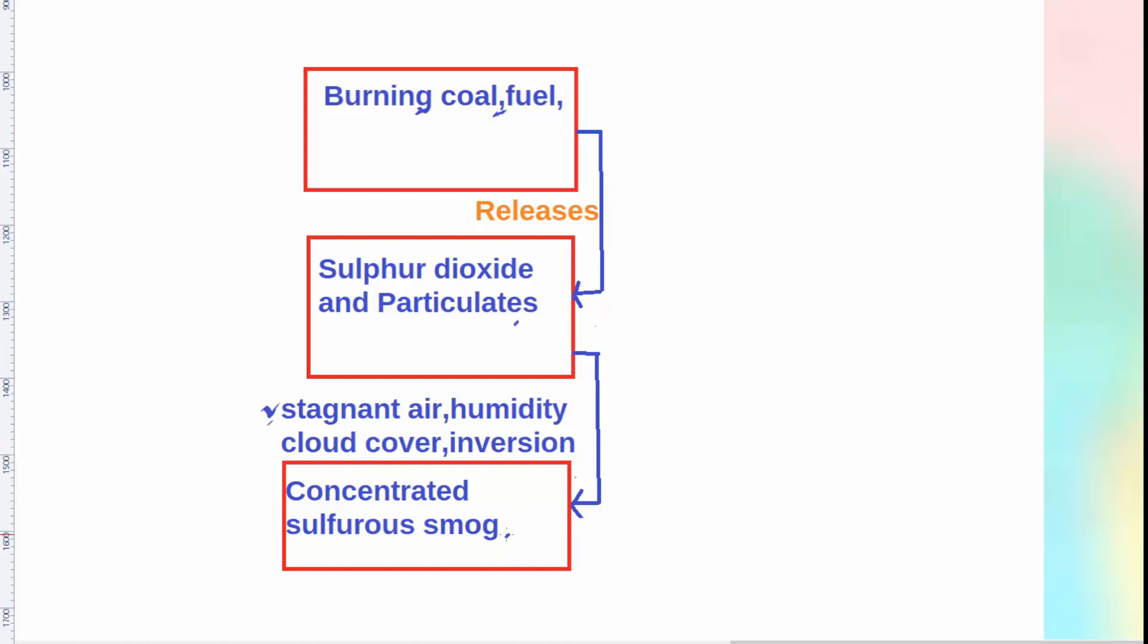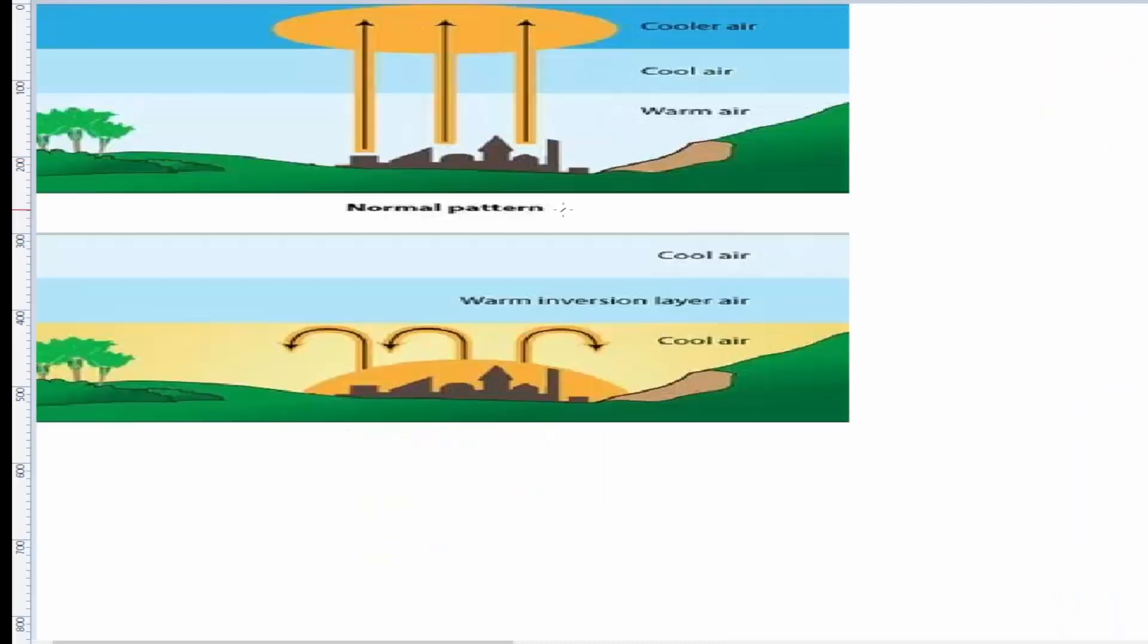Inversion of temperature is very important term to understand. Temperature inversion is reversal of temperature. In the normal pattern, as we go up, temperature decreases. At the ground level, there is warm air, then cool, then cooler air.